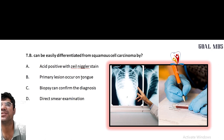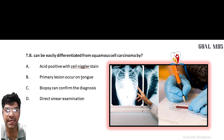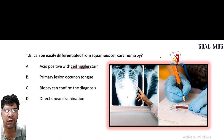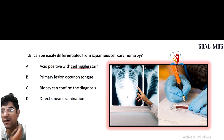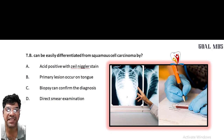TB can be easily differentiated from squamous cell carcinoma by biopsy. Biopsy involves taking a tissue sample from the affected area and examining it under a microscope. In the case of tuberculosis, specific staining techniques and culture may be necessary to confirm the presence of Mycobacterium tuberculosis, whereas squamous cell carcinoma will show cancerous changes in the tissue.